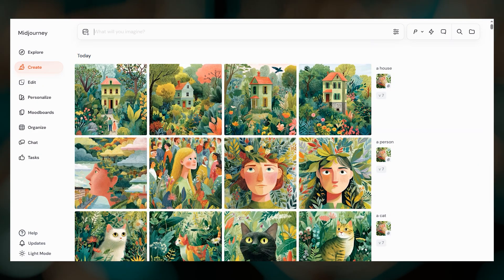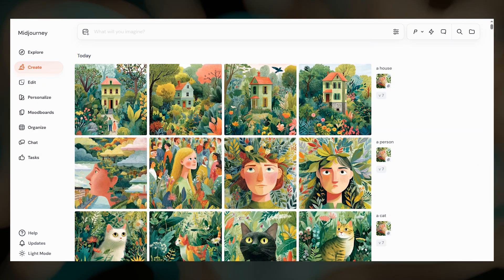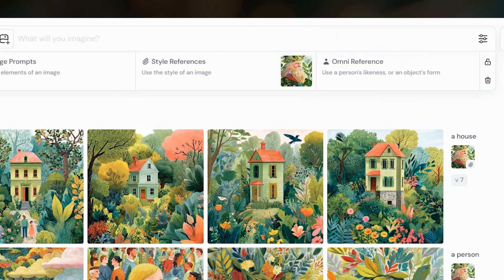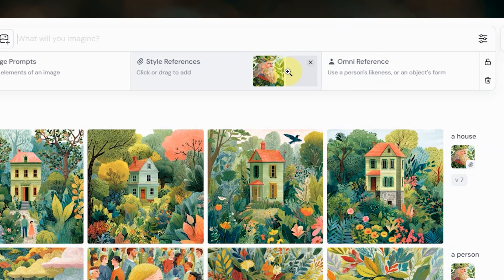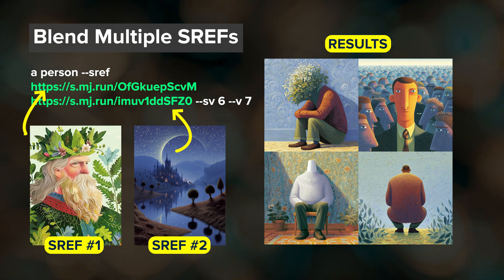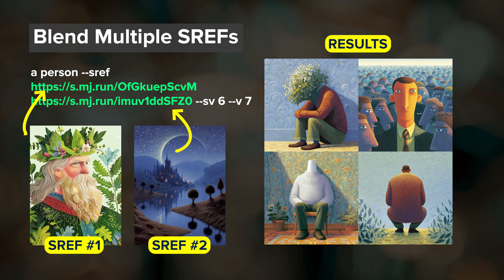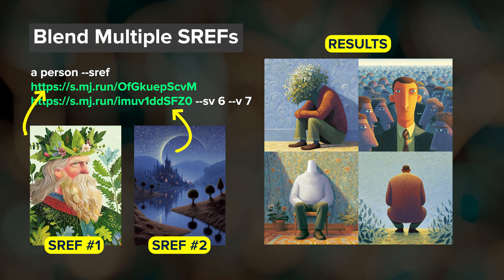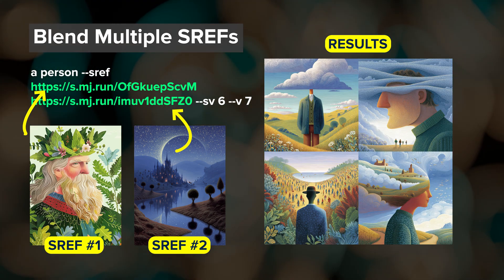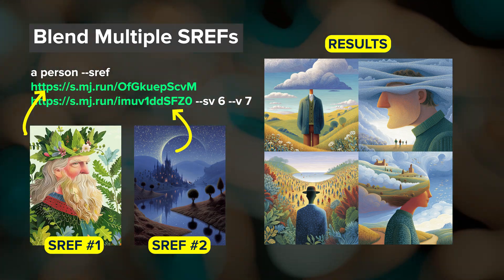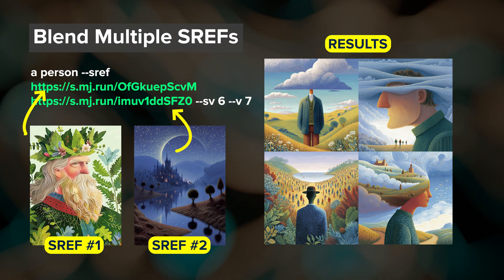You can also use multiple images as style references by adding more images to the style reference box. When you use multiple images, Midjourney blends their aesthetics together to create one cohesive style. Here I added a second style reference image with a different color palette and you can see how those two style references were blended together in the results.